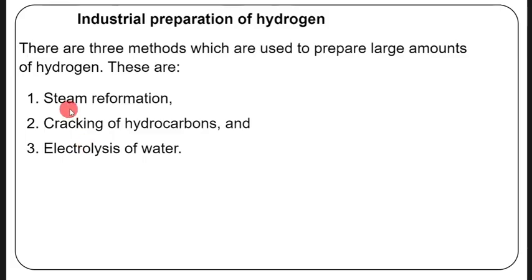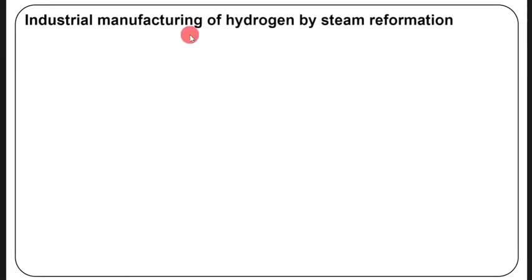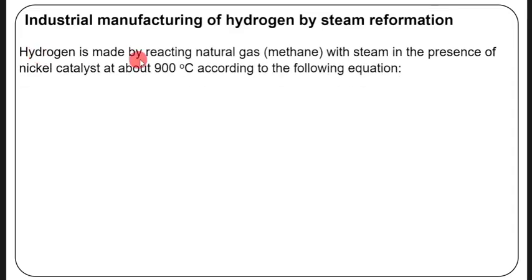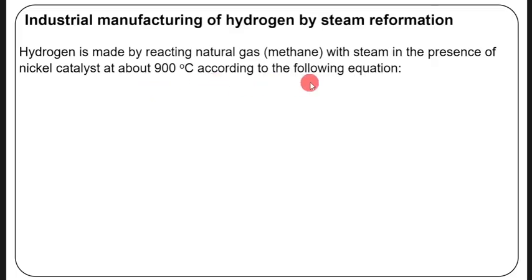Let's look at the industrial manufacturing of hydrogen by steam reformation. Hydrogen is made by reacting natural gas, which is methane, with steam in the presence of a nickel catalyst at about 900 degrees Celsius, according to the following equation.